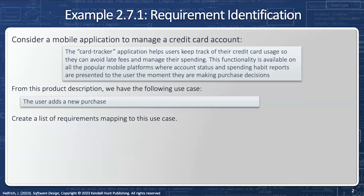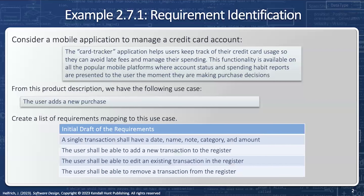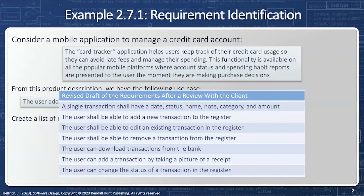Taking the use case 'user adds new purchase,' I'm going to say: a single transaction shall have a date, name, note, category, and amount. The user shall be able to add a new transaction to the register. The user shall be able to edit an existing transaction in the register, and the user shall be able to remove a transaction from the register. When I give the stakeholder these requirements, they'll talk about it, think about it, and give me more detailed ones.